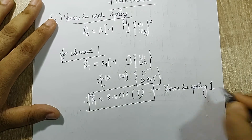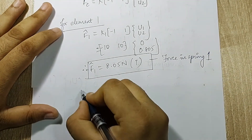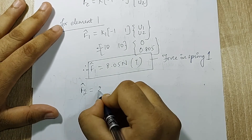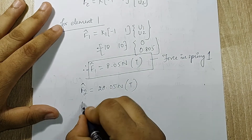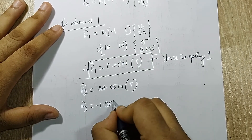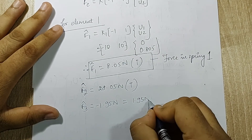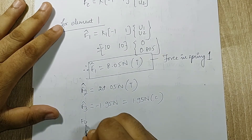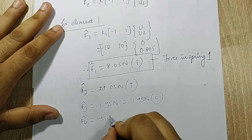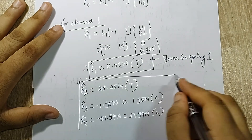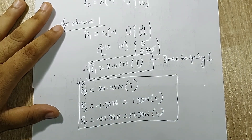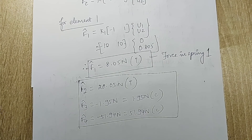Similarly, F2_bar is calculated and is positive — tensile. F3_bar = -1.95 N, which is negative — compressive. F4_bar = -51.94 N — compressive. These are all the spring forces. I hope you understood the numerical. I will see you in the next session with another numerical on the spring card system. Thank you.